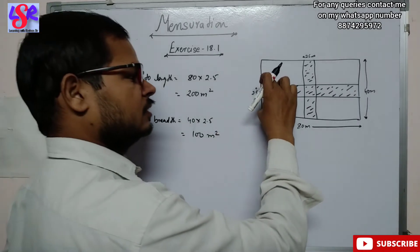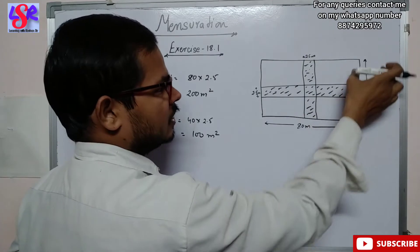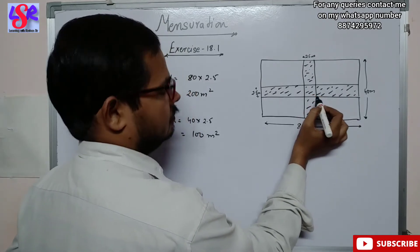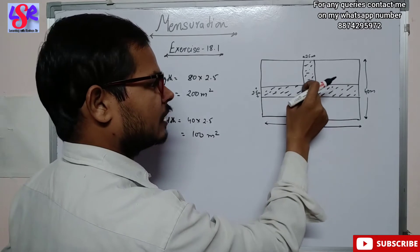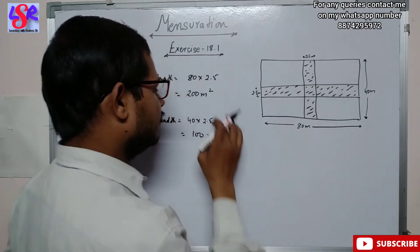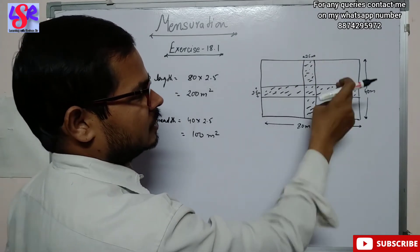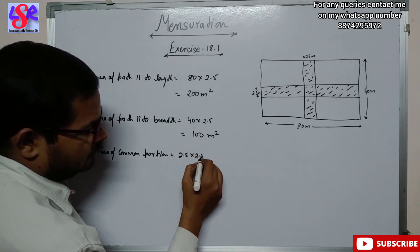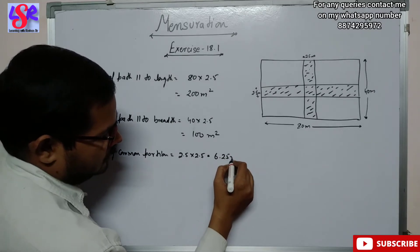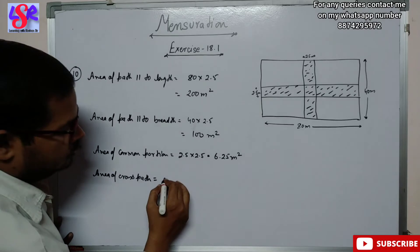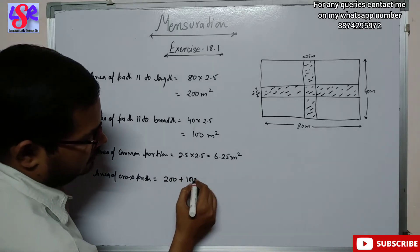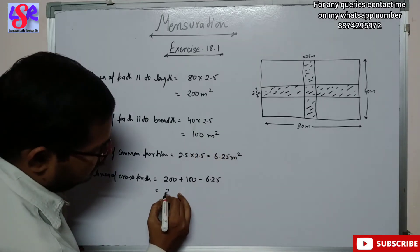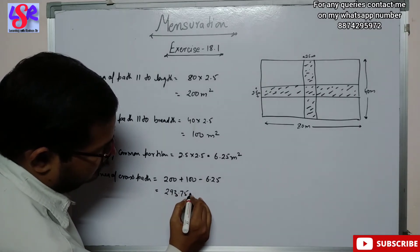We have calculated the area parallel to length and the area parallel to breadth, but the common intersection portion has been counted twice. So we calculate the area of that common portion, which equals 2.5 into 2.5, that is 6.25 meter square. The area of the cross path equals 200 plus 100 minus 6.25, which gives 293.75 meter square.